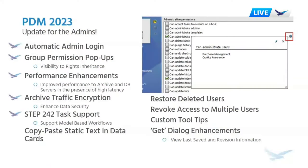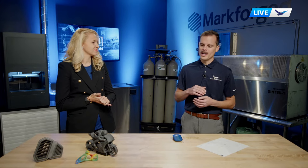Last but not least, we also want to briefly mention PDM. This update was really for the admins — the wizards behind the curtain that magically make everything work for the rest of the design team. Simple ones include automatic admin login so you just log in once in the morning, not twice. They can also take a look at visibility of rights inheritance for group permissions. The big two for 2023 PDM are performance enhancements for high latency issues with archive and database servers, and also traffic encryption for data security — always the top priority when it comes to our IP data.